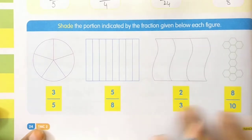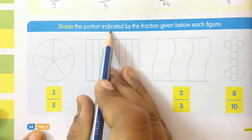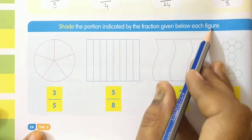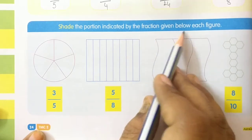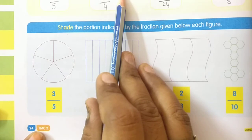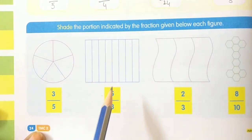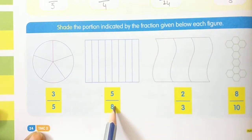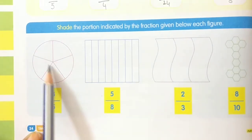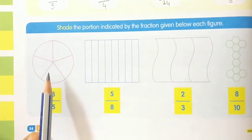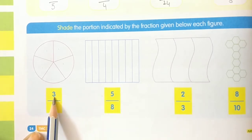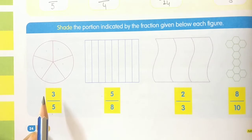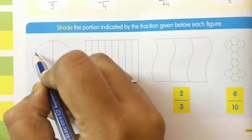Now come to the next question. The instruction says: shade the portion indicated by the fraction given below each figure. In the first question they have already shaded and given — now here we have to shade. Total how many parts do you have? One, two, three, four, five — total five parts. The denominator is five and numerator is three, so we have to shade three parts.